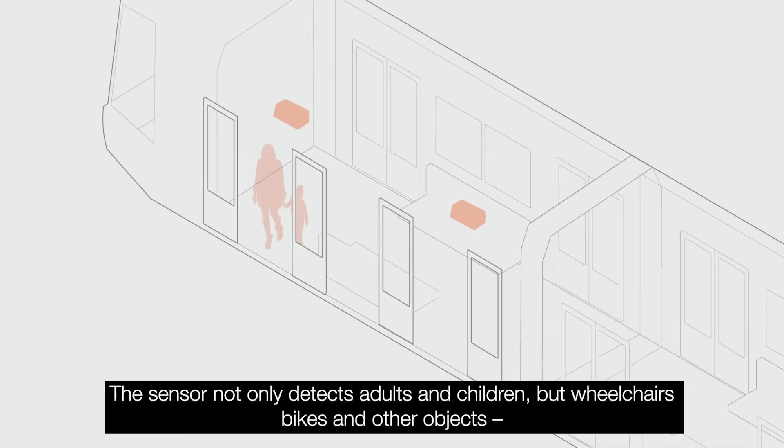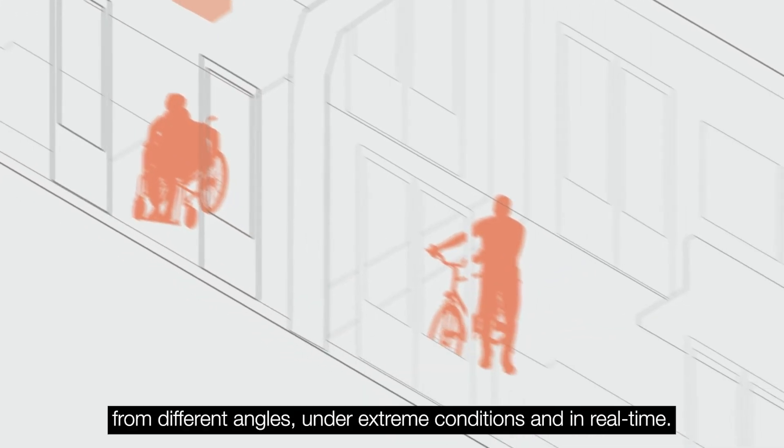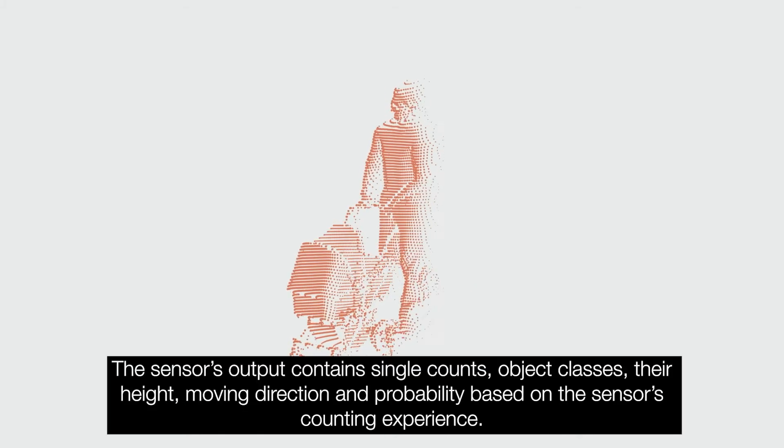The sensor not only detects adults and children, but wheelchairs, bikes, and other objects from different angles, under extreme conditions, and in real time.